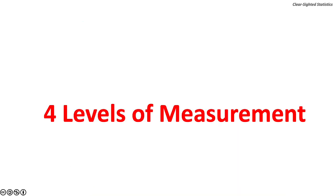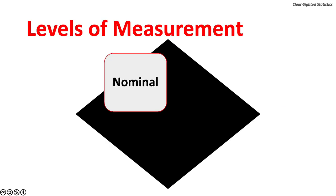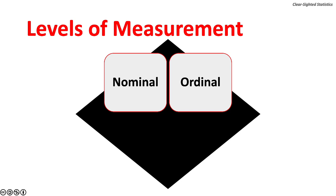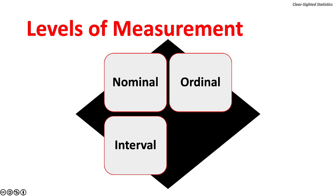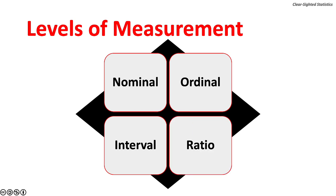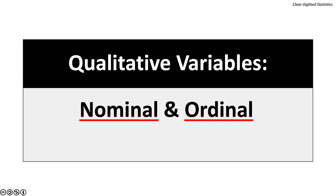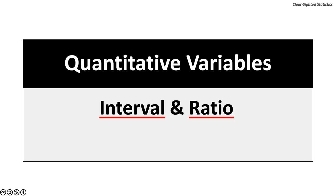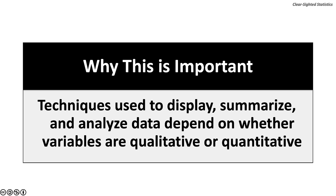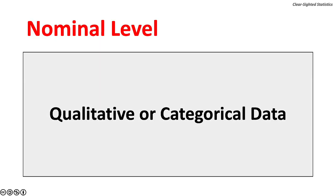Let's turn to the four levels of measurement. This is a very important topic because the type of analyses you can perform depends on the level of measurement for the data. The lowest level is nominal, the second is ordinal, the third is interval, and the fourth is ratio. The nominal and ordinal levels are qualitative measures. The interval and ratio levels are quantitative measures. Techniques used to display, summarize, and analyze data depend on whether the variables are qualitative or quantitative.